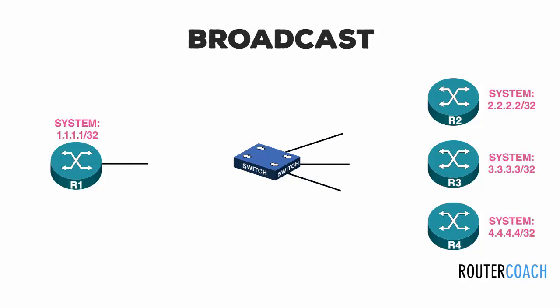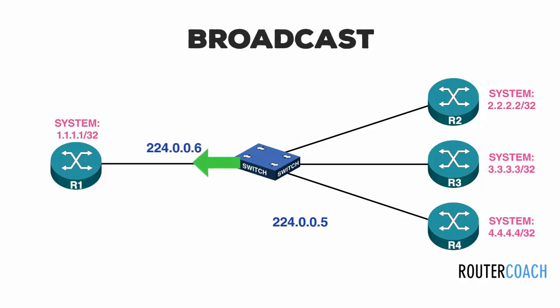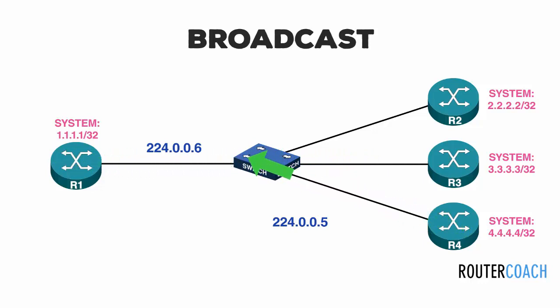Broadcast access networks are when more than two devices can connect to the network and packets sent by one device can be seen by all connected devices. OSPF actually uses multicast rather than broadcast for sending messages: 224.0.0.5 to send information to all OSPF routers, and 224.0.0.6 to send information to the designated router and backup designated router. A designated router is always elected on a broadcast network.